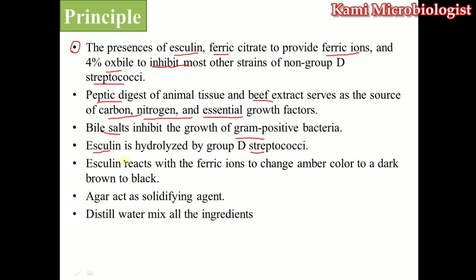We have esculin, which is especially used for hydrolysis — Streptococcus mostly uses esculin for hydrolysis. When esculin reacts with ferric iron, the amber color of the media is converted into dark brown or black color. We also have agar, which acts as a solidifying agent, providing a stable surface through which bacteria grow in the form of colonies.